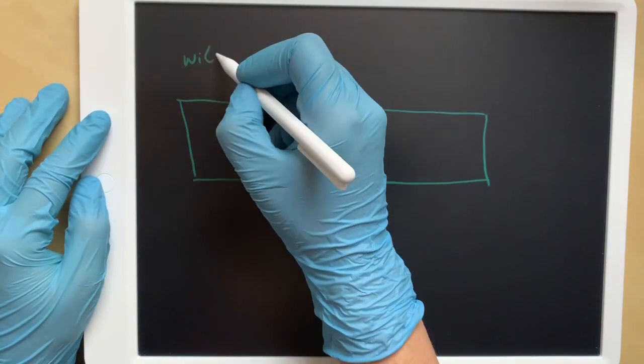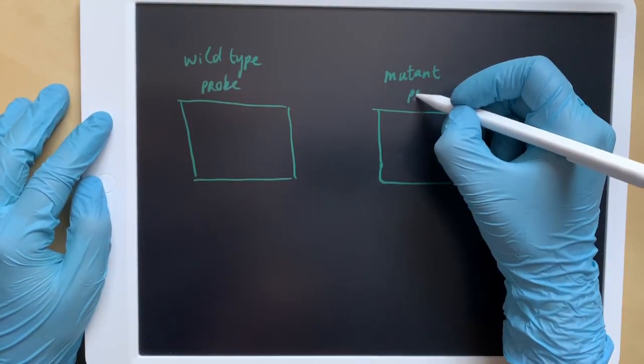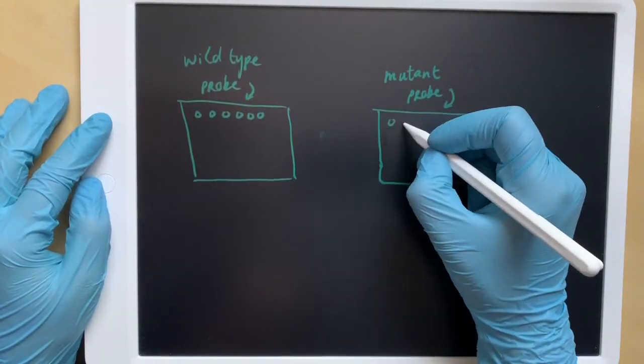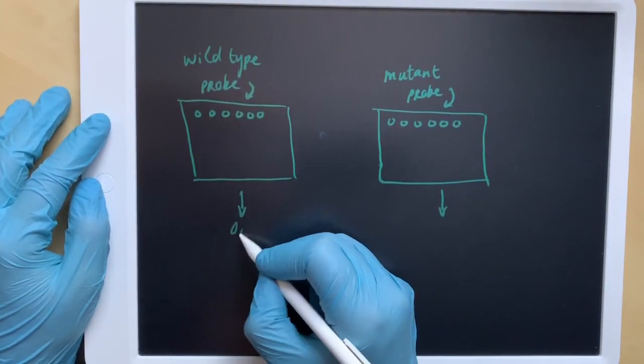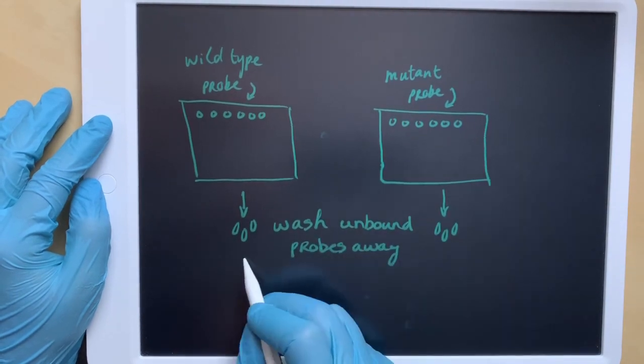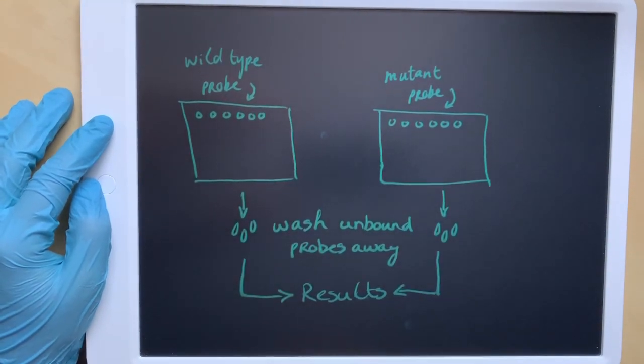After this, the probes are added to the membranes, the wild-type probe to one membrane and the mutant probe to another. All the unbound probes are then washed away. The detection method depends on what kind of label is used on the probes.